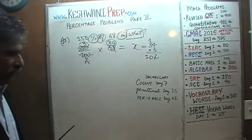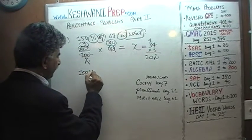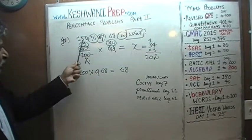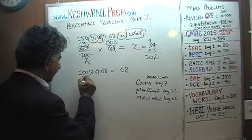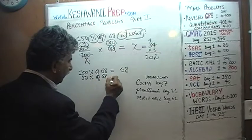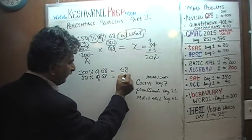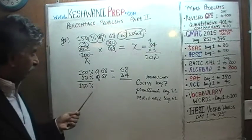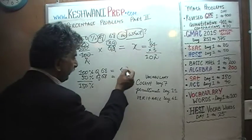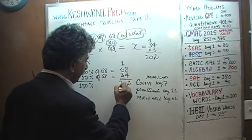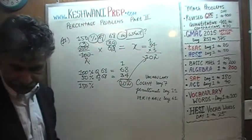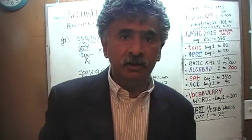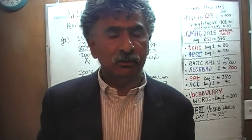Another way: 100% of 68 is simply 68. We want 150%, so we add another 50%. 50% of 68 is half of 68, which is 34. Adding them up: 68 plus 34 gives us 102 — the same answer. You don't always have to solve algebraically; if you can find a quicker way, take advantage of it.